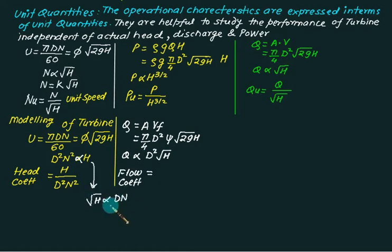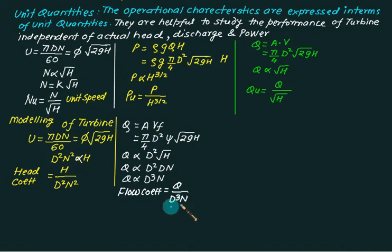So we have a product of d square q is proportional to d square into root h. We know that the root h is proportional to dn. So we can modify this q as q is proportional to d square into dn. Hence the flow coefficient is given by d cube n. So this ratio is constant for, common for both, model and prototype.